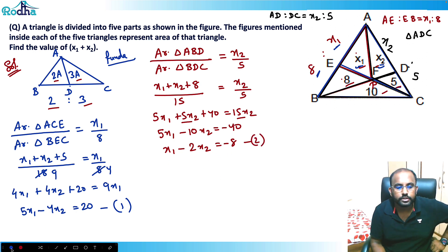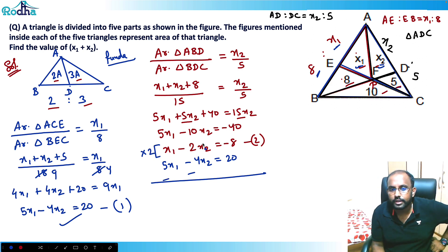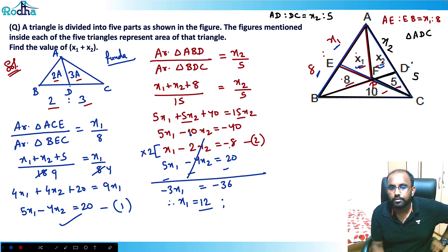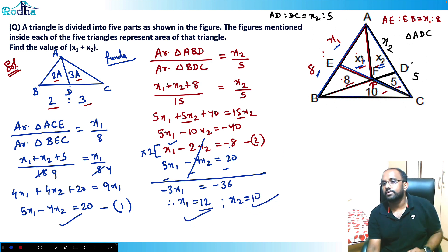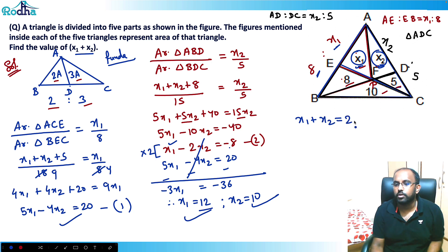Now solving the two simultaneous equations: 5x1 - 4x2 = 20 and x1 - 2x2 = -8. Multiply the second by 2 and subtract: we get -3x1 = -36, so x1 = 12. Substituting back: 12 - 2x2 = -8, so x2 = 10. Therefore x1 plus x2 equals 22.